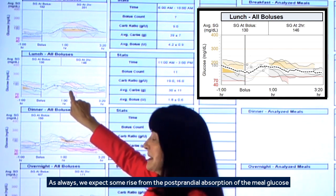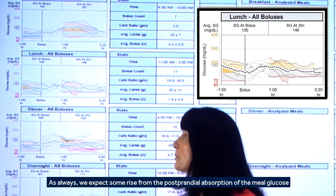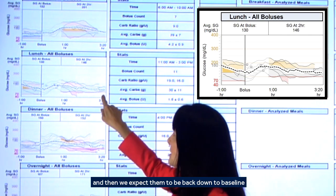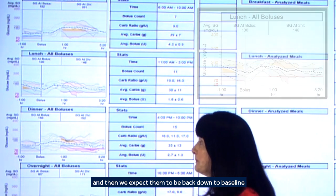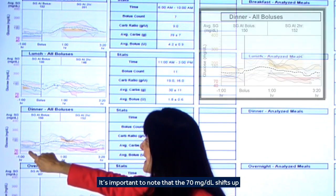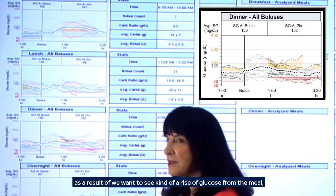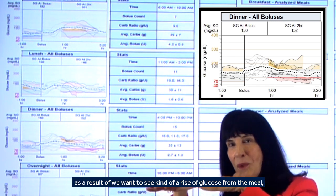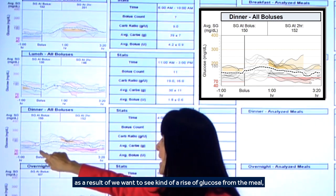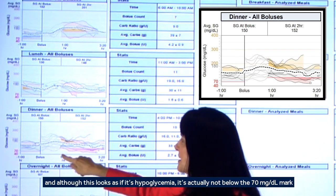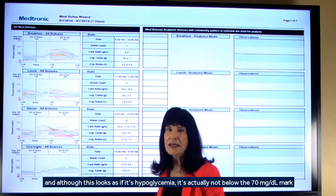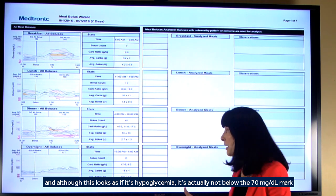As always, we'd expect some rise from the postprandial absorption of the meal glucose and then expect it to be back down to baseline. It's important to notice that the 70 milligram per deciliter shifts up as a result of wanting to see a rise of glucose from the meal. And although this looks as if it's hypoglycemia, it's actually not below the 78 milligram per deciliter mark.